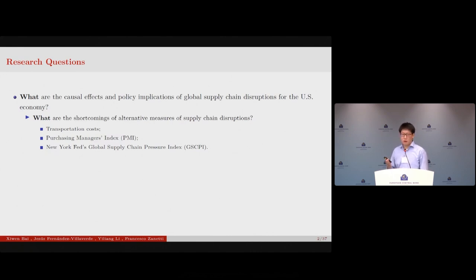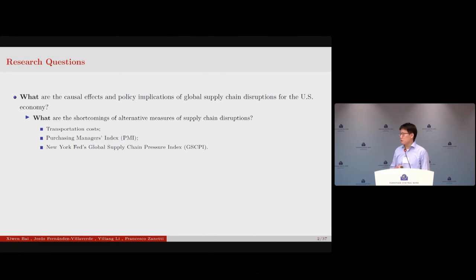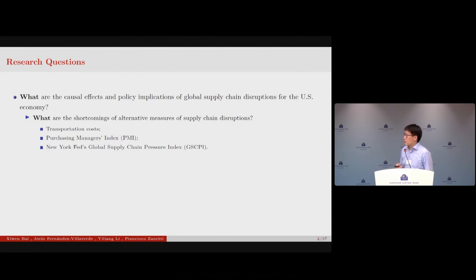These two measures have their own shortcomings. For transportation costs, it is a price measure, so it inherently internalizes demand-side price changes — it's not pure enough. For the PMI index, because it is based on survey responses from purchasing managers, it is inevitably subject to very large measurement errors. The famous New York Fed's Global Supply Chain Pressure Index builds on these two components, and I will show later that our results are quite different from theirs in reading the causal effects of supply chain disruptions on the U.S. economy.